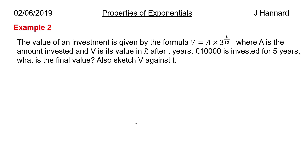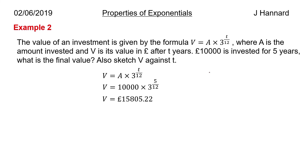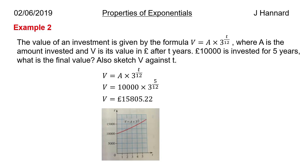Example 2: The value of an investment is given by the formula V equals A times 3 to the T over 12, where A is the amount invested and V is its value in pounds after T years. £10,000 is invested for 5 years — what is the final value? V equals 10,000 times 3 to the 5 over 12, because T is 5 years and A is 10,000. V is actually £15,805.22.